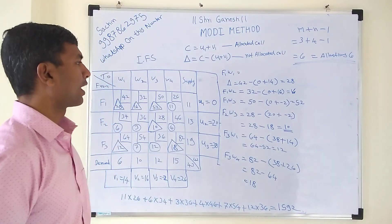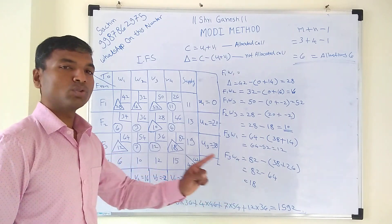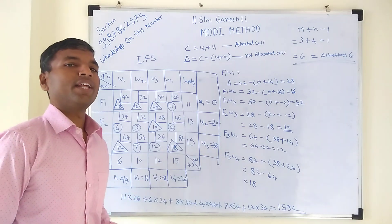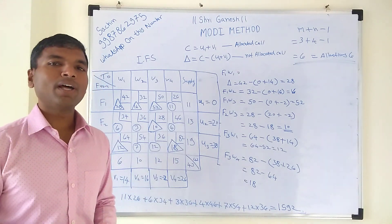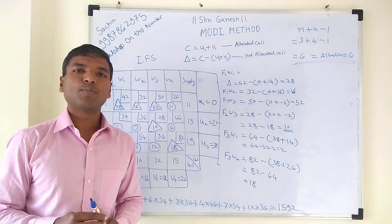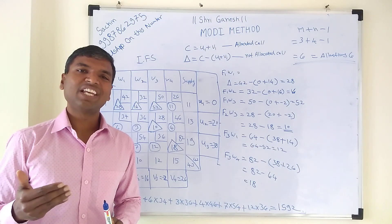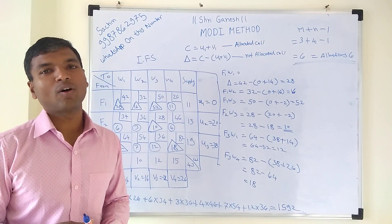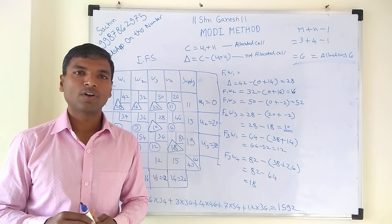You can verify this with a calculator. The transportation cost is 1592, which matches the value we got in the VAM method video lecture. This is the way of solving a simple MODI method transportation problem. I will soon upload more MODI method problems that are a bit more difficult, including cases involving degeneracy and satisfying the rim condition.